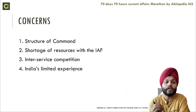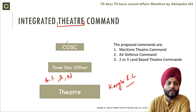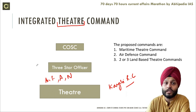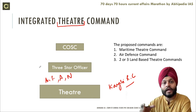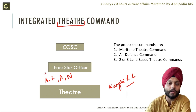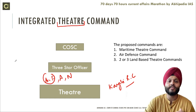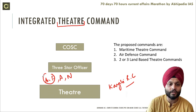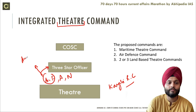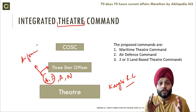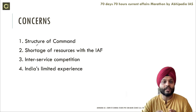The first concern is the structure of command. If an Army officer is given control of a theater — commanding Air Force, Army, and Navy — and there is a disagreement, and the Air Force general has a different point of view, there will be conflict. Because while the Air Force officer may be answerable to the three-star officer, ultimately he is from the Air Force. This needs to be finalized with absolute clarity so that this conflict does not take place.